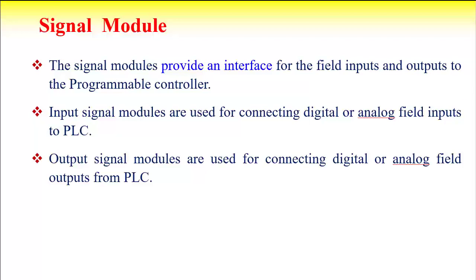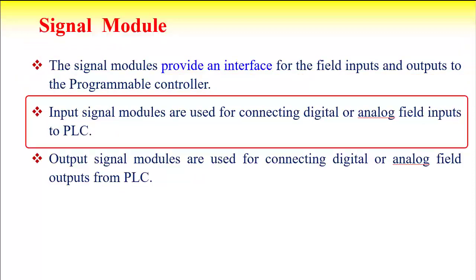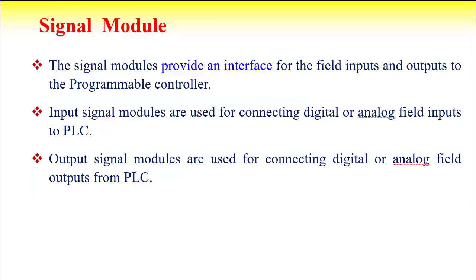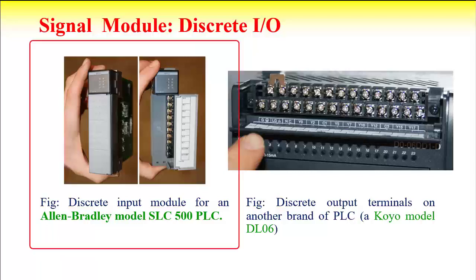Signal modules provide an interface for the field inputs and outputs to the programmable controller. Signal modules are directly connected with field devices and send signals from the field devices to the PLC. Input signal modules are used for connecting digital or analog field inputs to PLC. Output signal modules are used for connecting digital or analog field outputs from PLC to output devices. This is an example of a discrete input module from Allen Bradley model SLC 500 PLC, where 8 inputs can be connected.